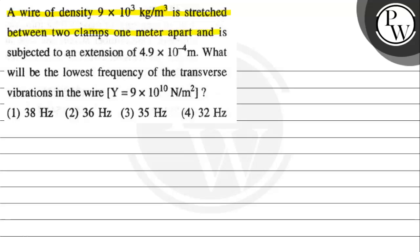one meter apart and is subjected to an extension of 4.9 × 10⁻⁴ meter. What will be the lowest frequency of the transverse vibration in the wire? Young's modulus Y is given as 9 × 10¹⁰ N/m².